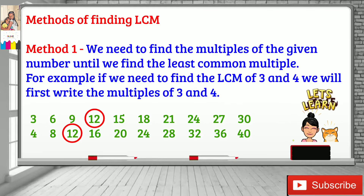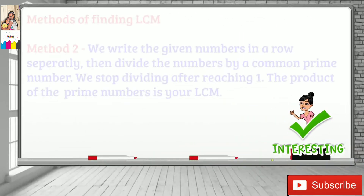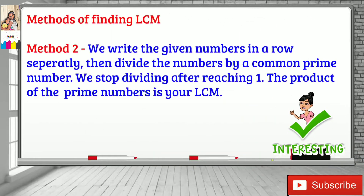Now let's look at another method. We write the given numbers in a row separately, then divide the numbers by a common prime number. We stop dividing after reaching one. The product of all the prime numbers used is your LCM.